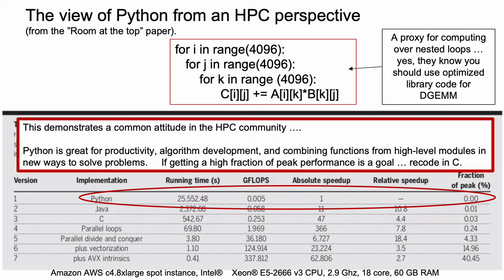Looking at the last column to the far right, where they give the fraction of peak performance, Python gives you an absolutely blazing 0% of peak performance. If you round to the number of significant figures in their study, it's basically 0%. This feeds into an attitude common in the HPC community: go ahead, use Python for pulling together lots of independent programs to build a workflow, use Python to experiment with different algorithms, to analyze your data. But when you're ready for something with performance, use a grown-up language — recode in C.